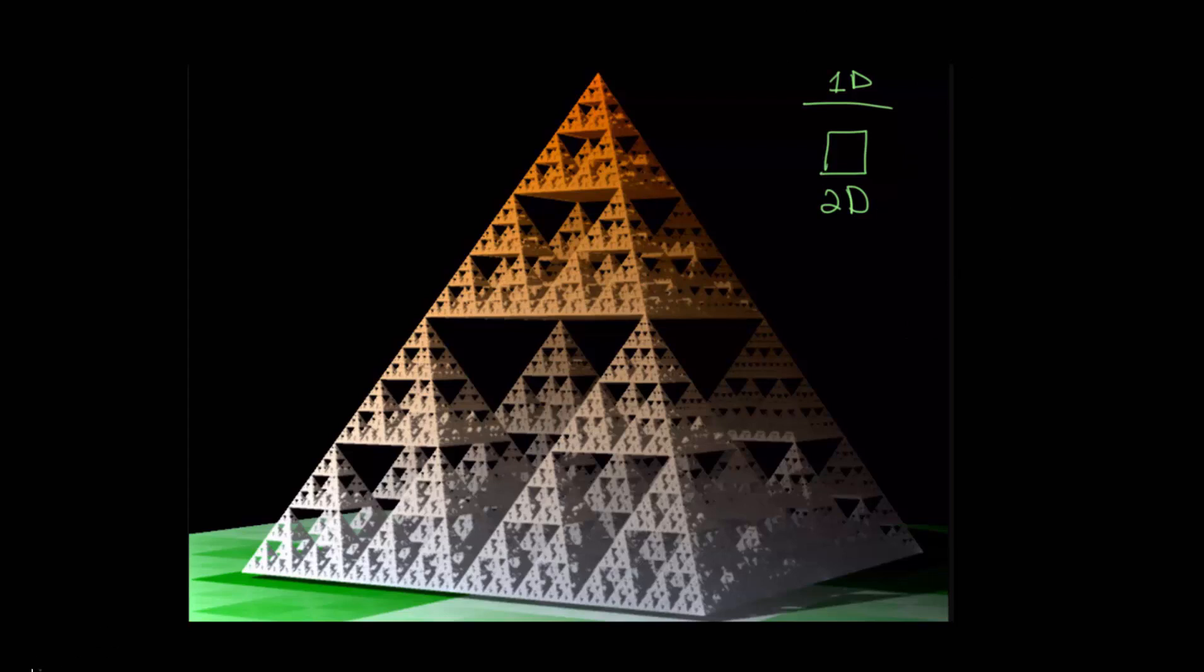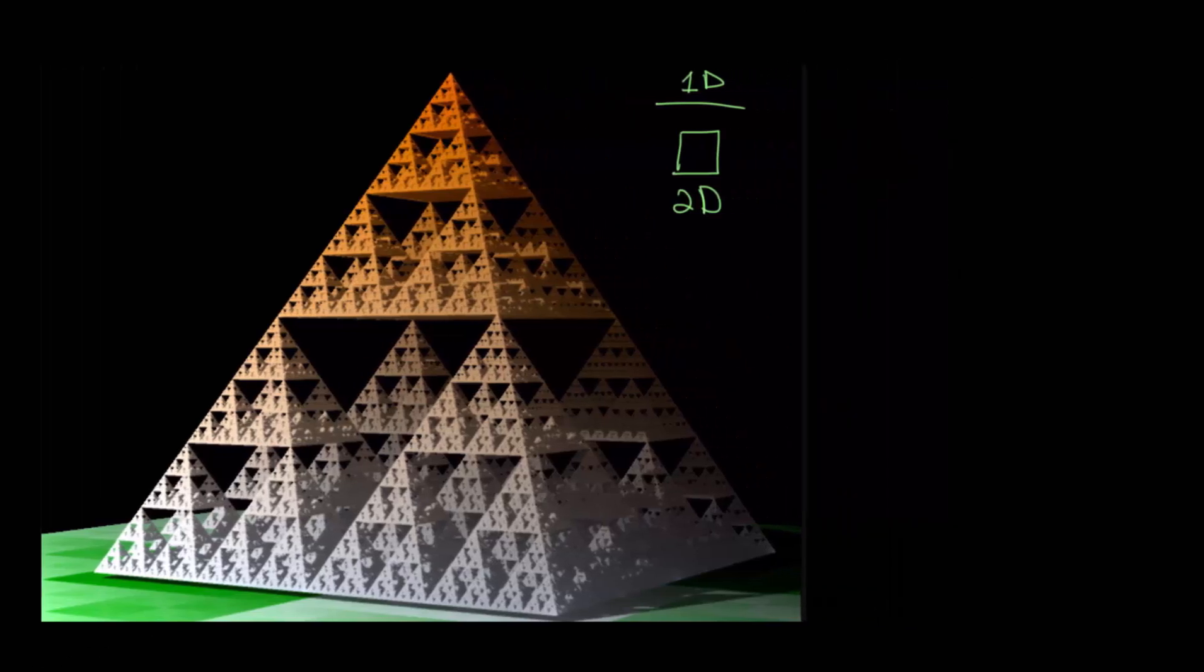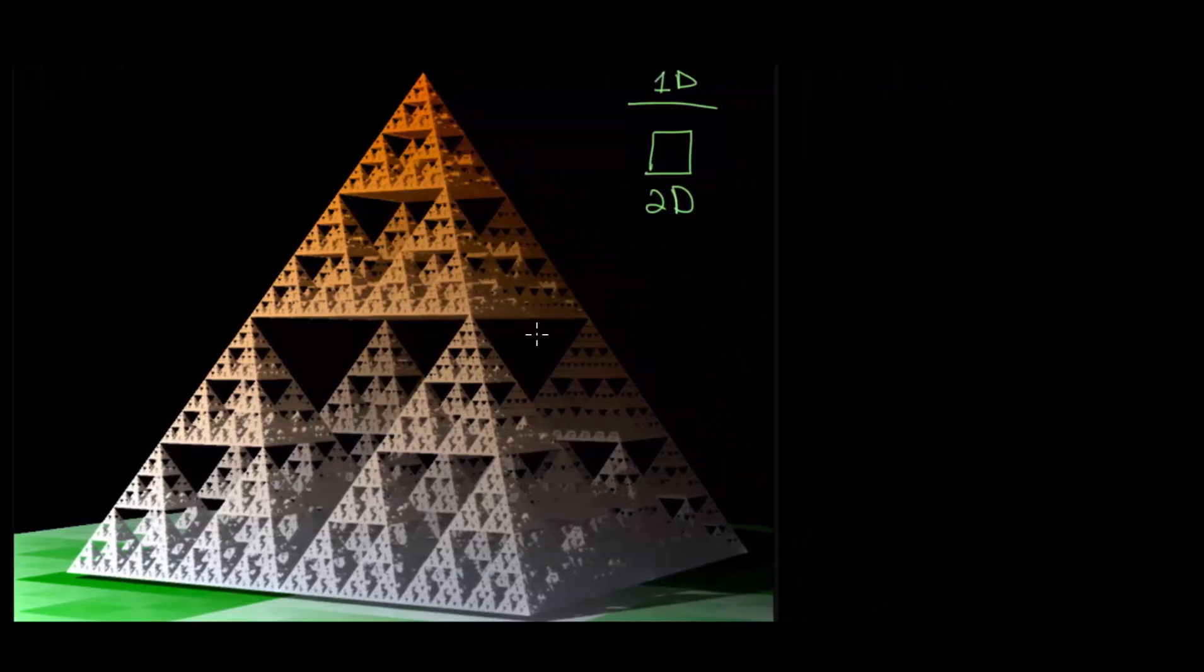And we've looked at in previous videos how to calculate the dimension of self-similar objects, specifically fractals, but also simple shapes as well. And when we consider the scaling factor, what we're dividing each of the side lengths by to create smaller versions of the original, and we consider the number of new pieces that we end up with, we can figure out the total dimension.